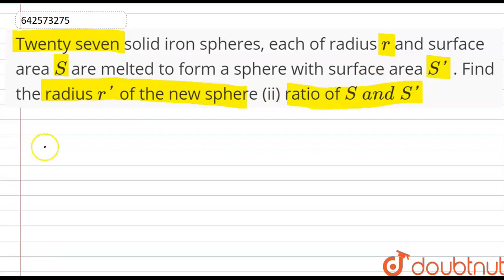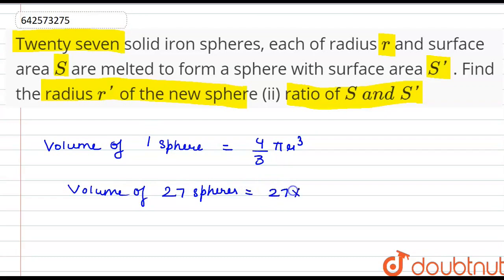For the first part, we are given that the volume of one sphere is 4/3 π r³. So the volume of 27 spheres would be 27 × 4/3 π r³.